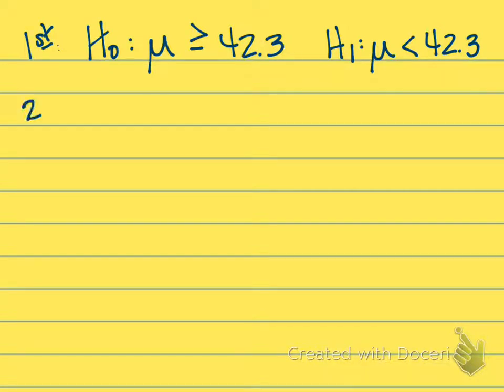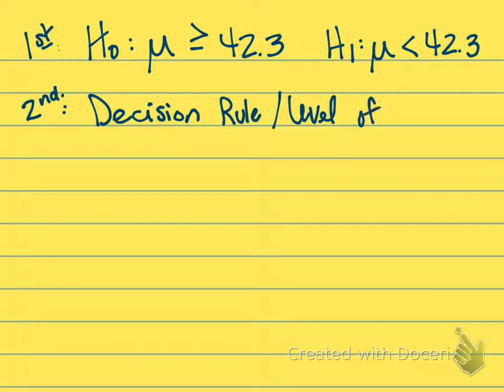Our second step is to figure out what is our decision rule. This is based on the level of significance that the problem gives us. We're still going to use that same table B5 from your text, but this time it's going to be a little different.